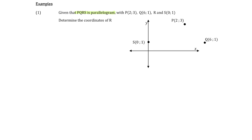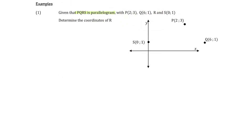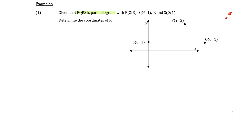There might be two possible locations of R — maybe R is up there, giving one parallelogram, or maybe R is down here, giving another. So which one is it? The key is in the name. If the quadrilateral is named PQRS, the order of the letters follows the vertices either clockwise or anticlockwise.